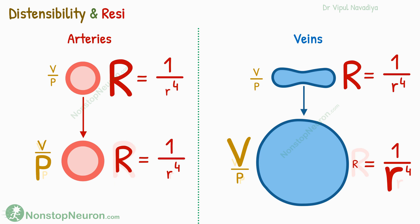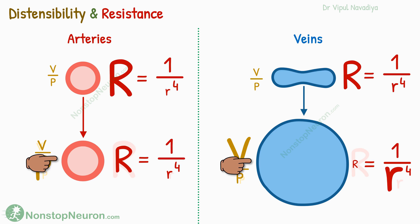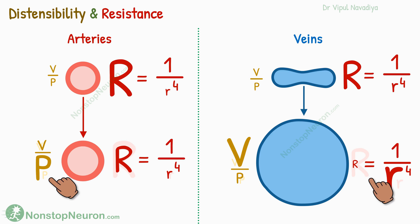If we put everything together, this is the final picture for judges. For both arteries and veins, the upper side is the initial situation, and the lower sides are the situation after some increase in pressure. The values of all the parameters are presented in the form of the size of their symbols. On the lower side, I have shown the initial sizes in very faint colors for easy comparison. Don't confuse them with anything else.